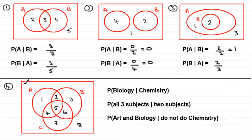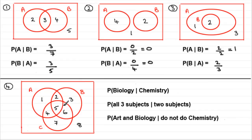Now we'll move on to number four. In this one, we've got three subjects: A for art, B for biology, and C for chemistry, with all the numbers of people doing various subjects. Quickly running through: one person does art only, two people do art and biology but not chemistry, five do all three, three do biology only, and eight people do nothing. You might like to pause the video and have a go at the questions.